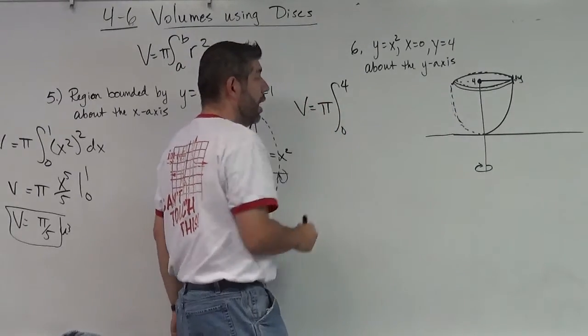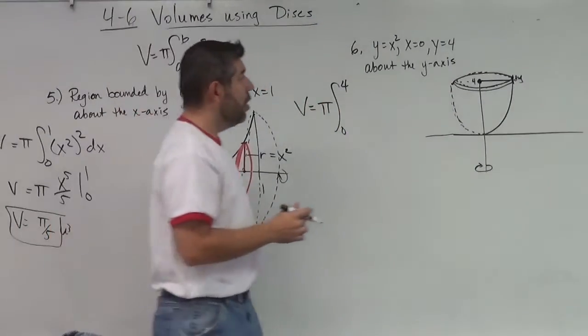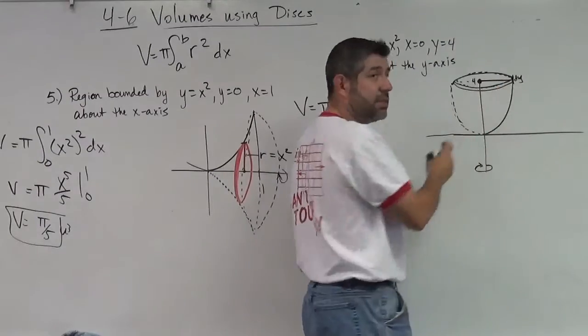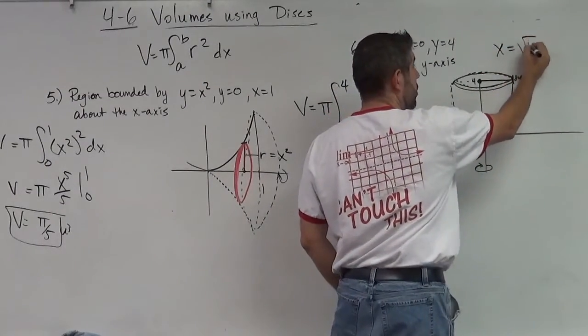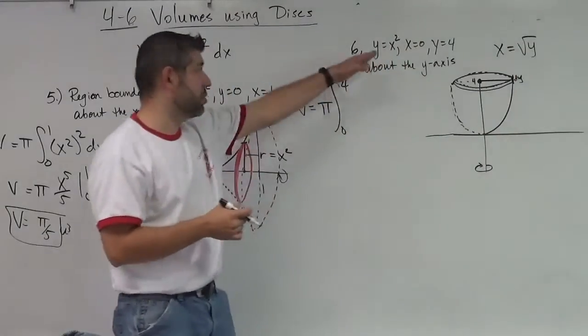What is r? r is my x-distance. So what I have to do is I have to say x is the square root of y, right? Because I'm going to just solve for x.